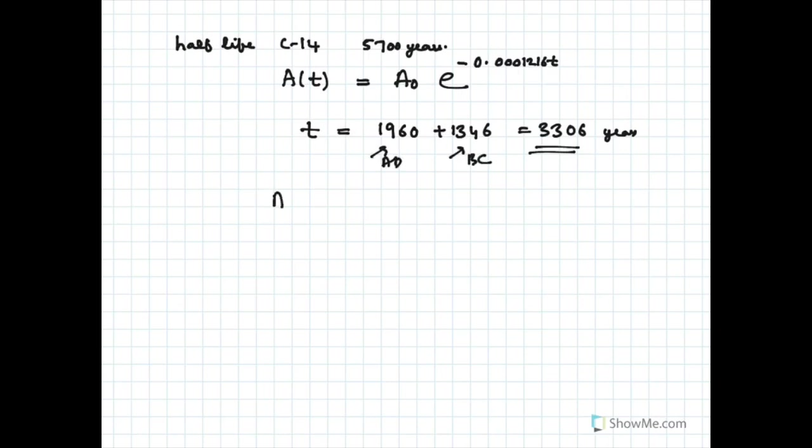So that means the amount present, you have to calculate this should be A₀ times e raised to minus 0.0001216 multiplied by 3,306. Now when you calculate this, you get 0.66897, which is 66.897 percent.